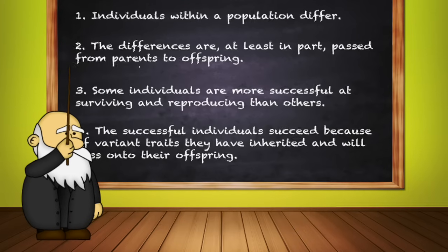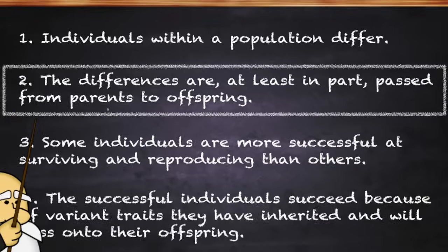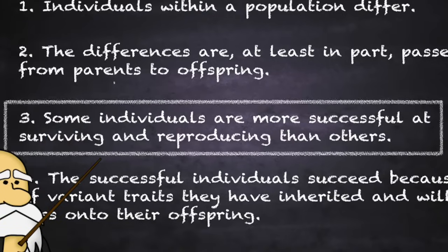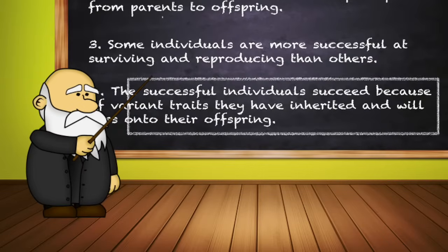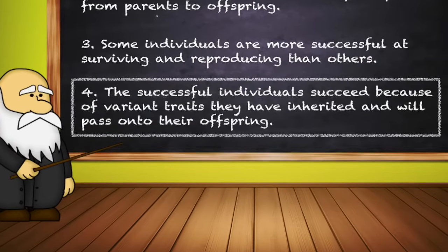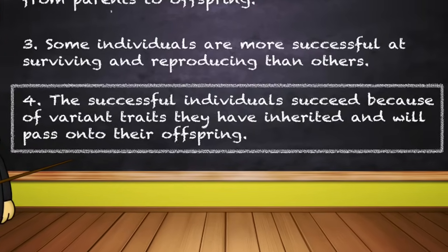Let's review. Individuals within a population differ. The differences are, at least in part, passed from parents to offspring. Some individuals are more successful at surviving and reproducing than others. The successful individuals succeed because of variant traits they have inherited and will pass on to their offspring.